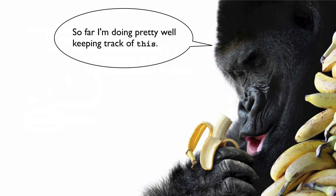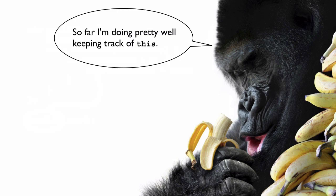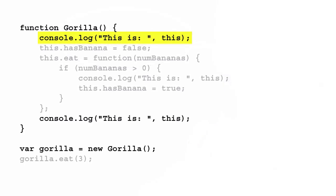So far, keeping track of the value of `this` has been fairly easy. Let's take a look at a couple of more complex situations in which we use `this` with objects. Before, we had a gorilla object created using an object literal, but here we have a gorilla constructor function that we can use to make gorilla objects. The first step in making a gorilla is to call the constructor function using the `new` operator. Unlike before, when we looked at the value of `this` in a regular function, the value of `this` in a function we call with `new` is not the global object `window`.